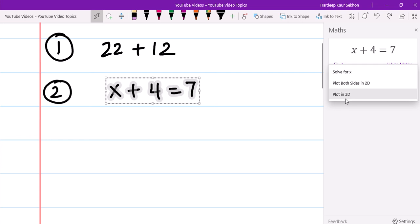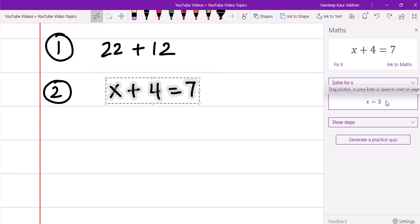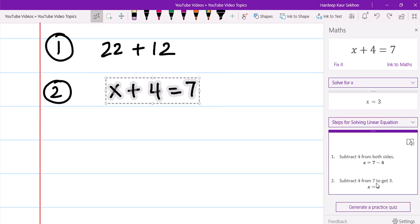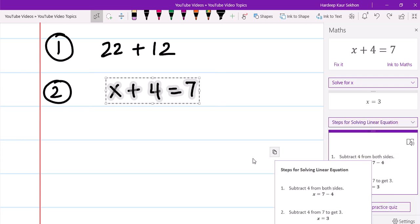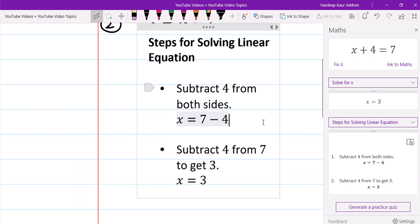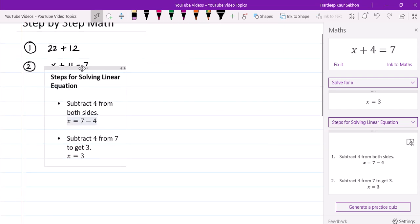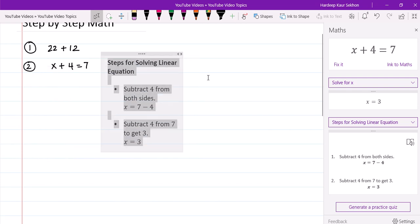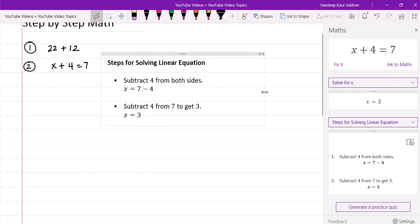So select an action and now we have different options. We can graph it, we can solve for x. Let's first do solve for x. Here is your answer: x equals 3. When I click on show steps, it will provide me step-by-step explanation here. Now I can just copy that down under each question right here. So here is my explanation for that. Subtract 4 from both sides. x equals 7 minus 4, and then the next step.